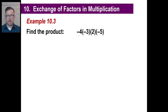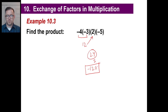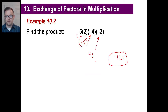Okay, I'm assuming you've paused it and done the problem. Negative 4 times negative 3 — a negative times a negative is a positive. 12 times 2 is, of course, 24. 24 times negative 5 — we can just hang on to the negative and go, 24 times 5 is 120, and a positive times a negative is a negative — that is negative 120 as well. That's the same answer we got in the previous problem.